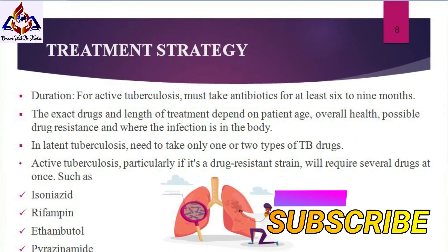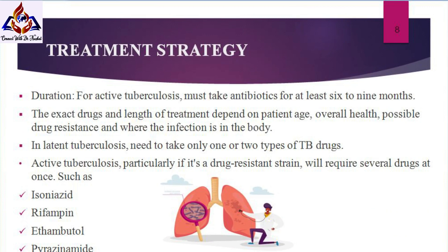If you have latent TB, your doctor might recommend treatment with medications if you are at high risk of developing active TB. For active tuberculosis, you must take antibiotics for at least 6 to 9 months. The exact drugs and length of treatment depend on your age, overall health, possible drug resistance, and where the infection is in your body.